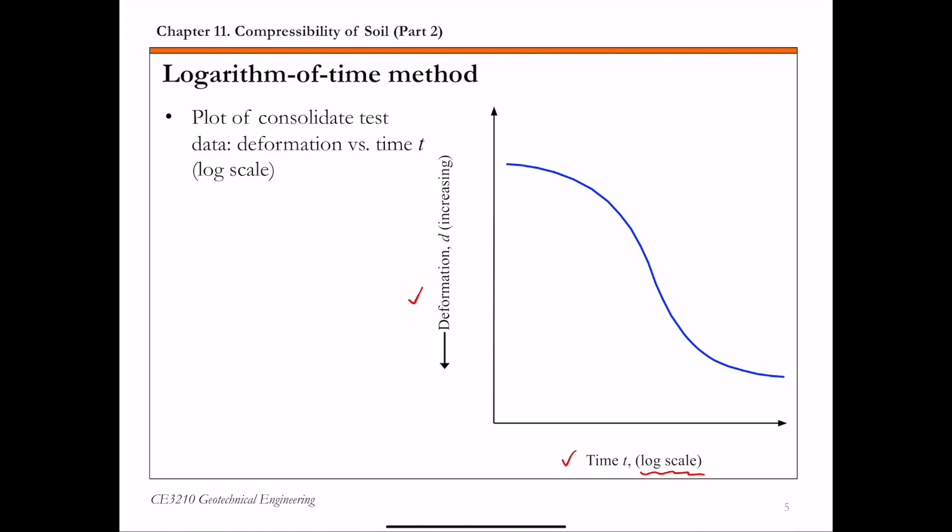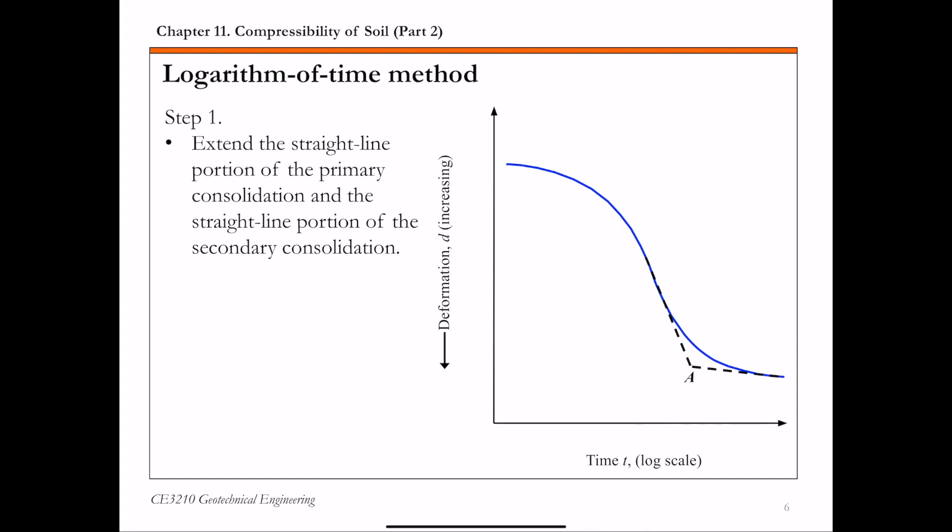From this curve, the first step is you want to extend the straight line portion of the primary consolidation. So this is the primary consolidation part of the curve. Extend the straight line portion of this curve and also extend the secondary consolidation, the straight line portion of the secondary consolidation.